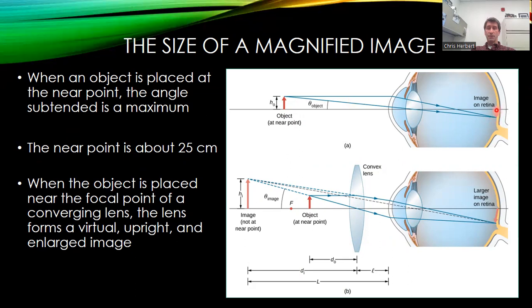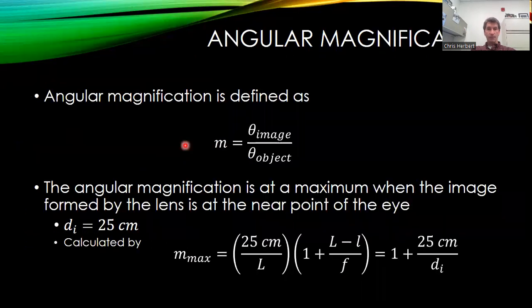And it's going to produce the largest focused image here. So I essentially want to do the same thing with my converging lens. I want to create an image that becomes the object for the eye at the near point.